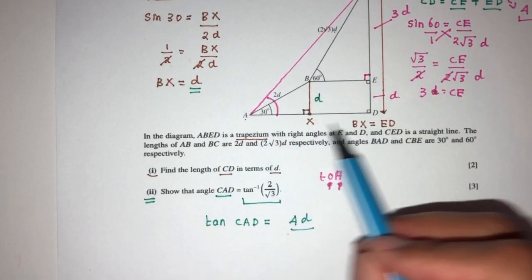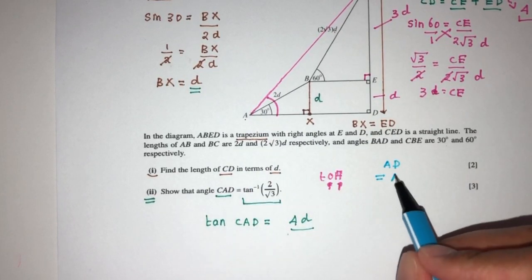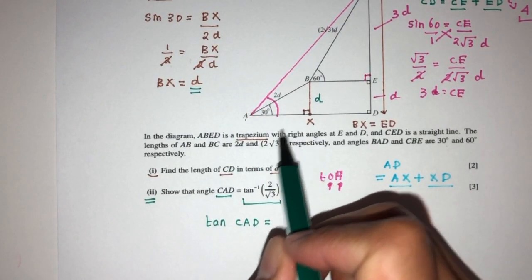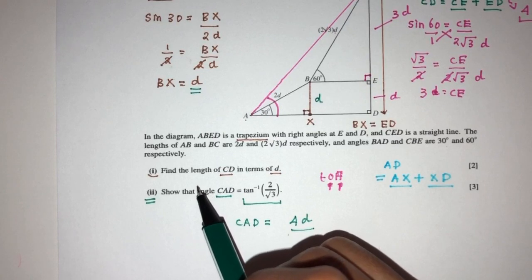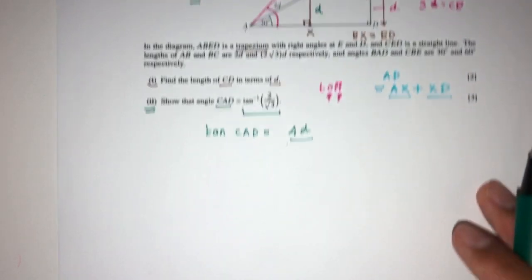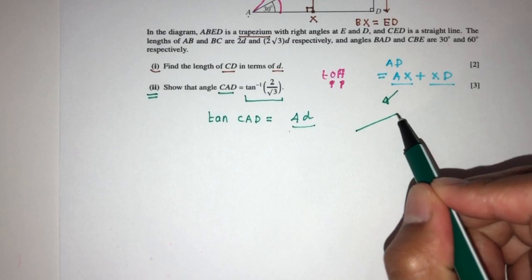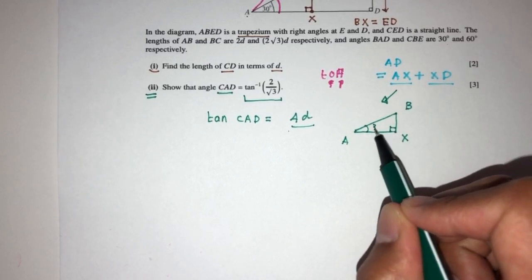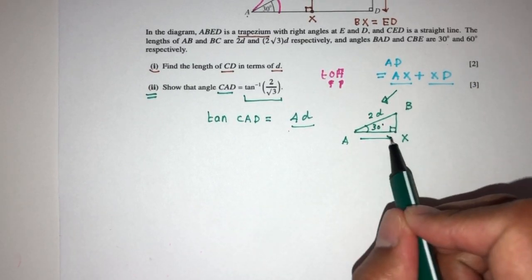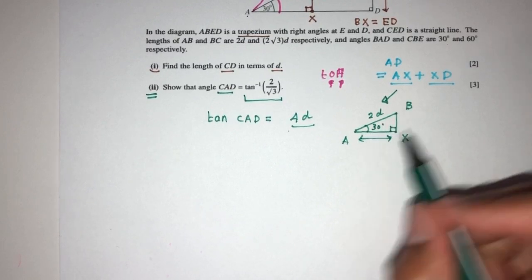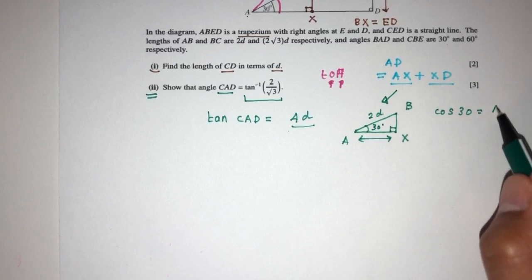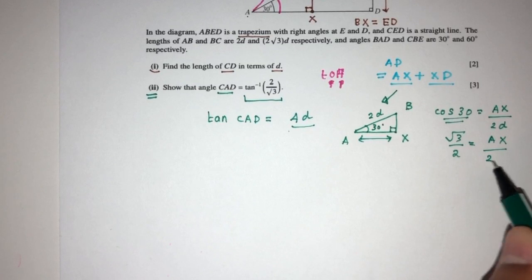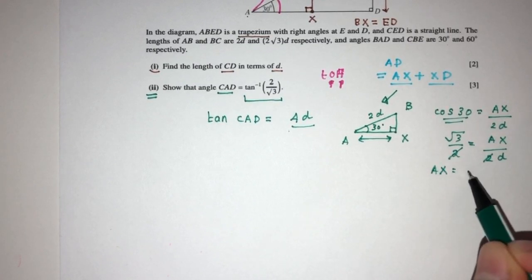AD is equal to AX plus XD. For AX, we use SOHCAHTOA again on triangle AXB, where the angle is 90 and the angle at A is 30. We know the hypotenuse is 2D and we want the adjacent side AX. So cos of 30 equals AX over 2D. Cos of 30 is √3 over 2, so AX equals √3D.